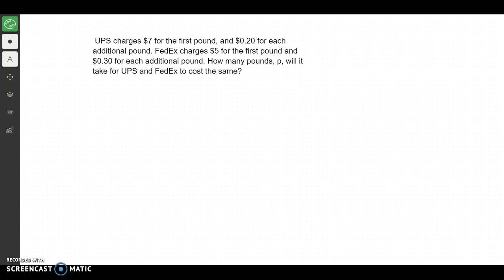So we have UPS charges $7 for the first pound. I'm going to write that down. If UPS charges $7 for the first pound, we're just going to write down a 7. And that's going to tell me a plus. So, $0.2 for each additional pound. Now I don't know how many additional pounds I'm going to need, so I'm just going to call that x.